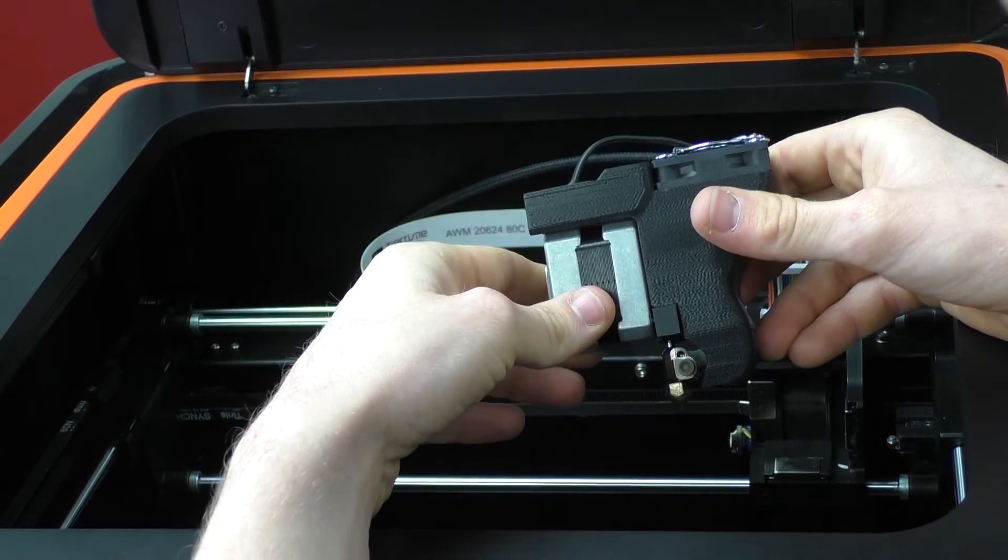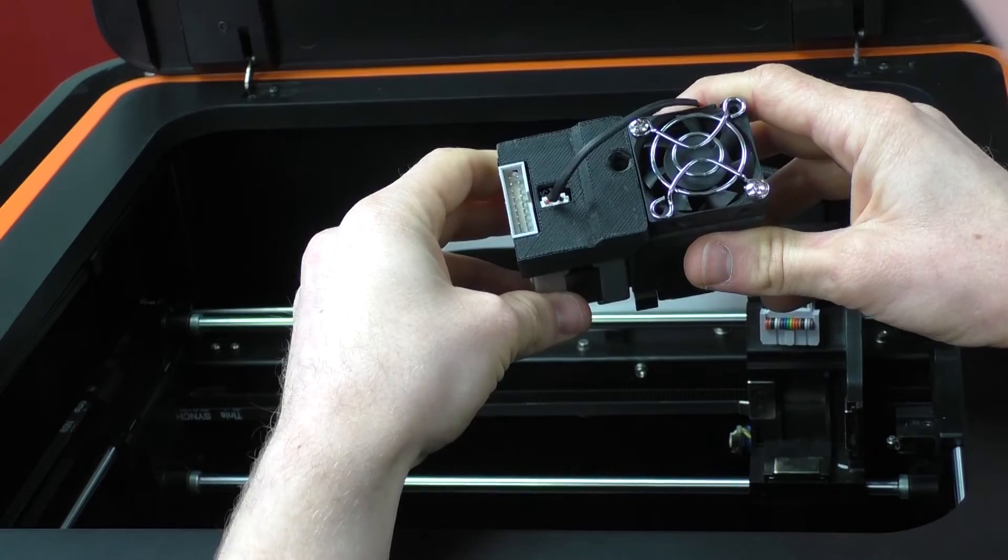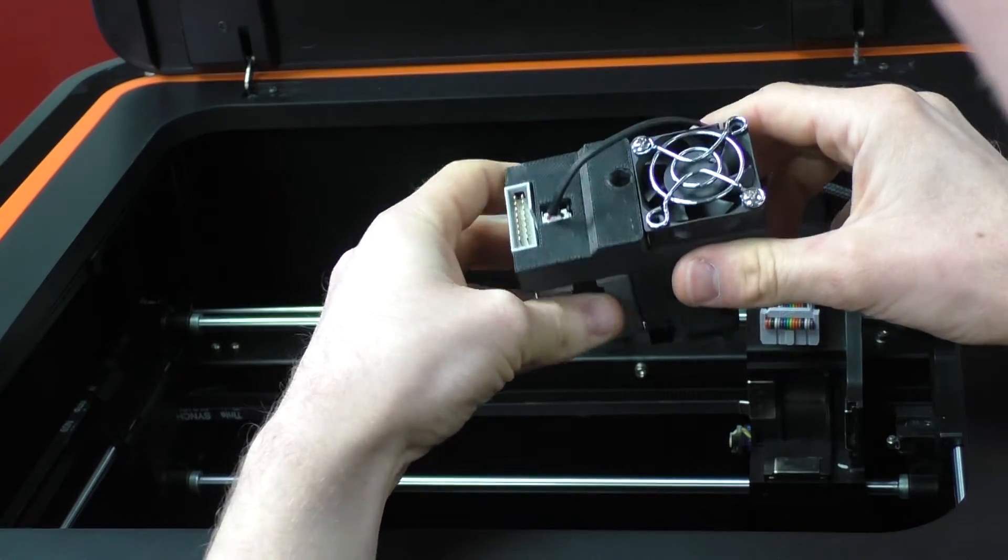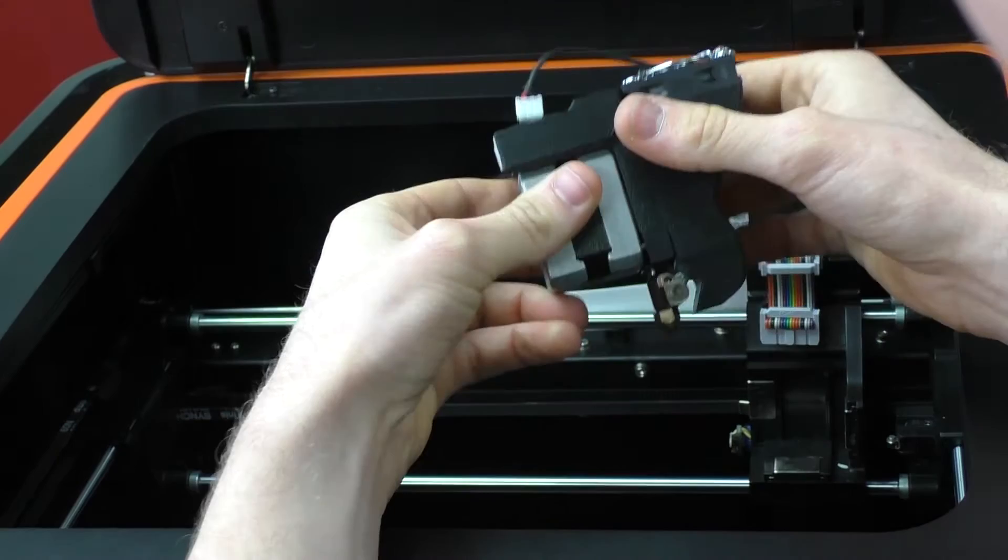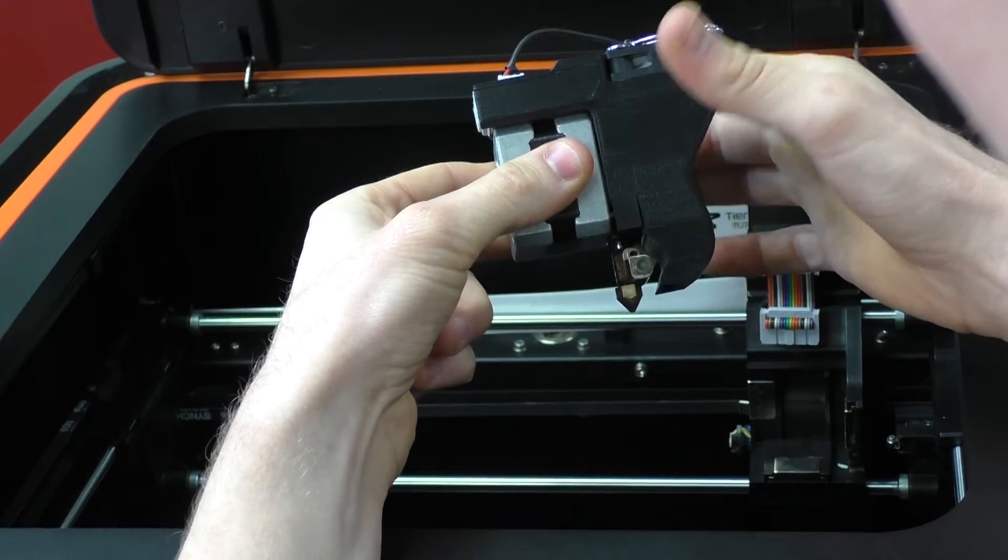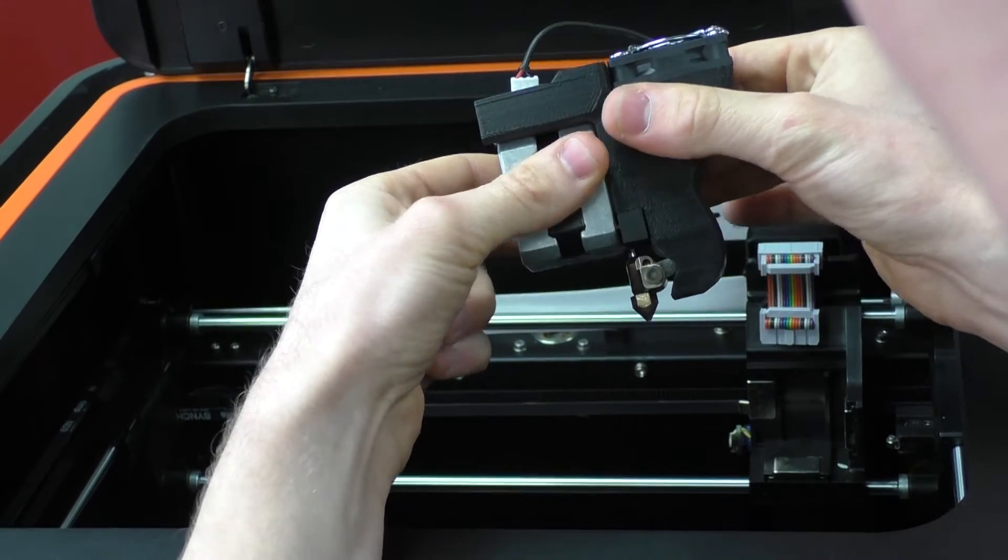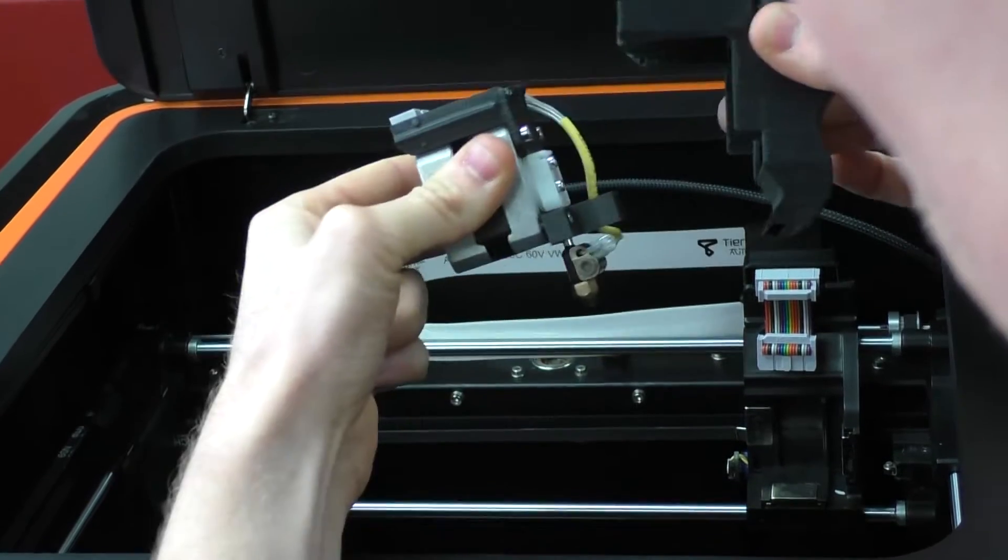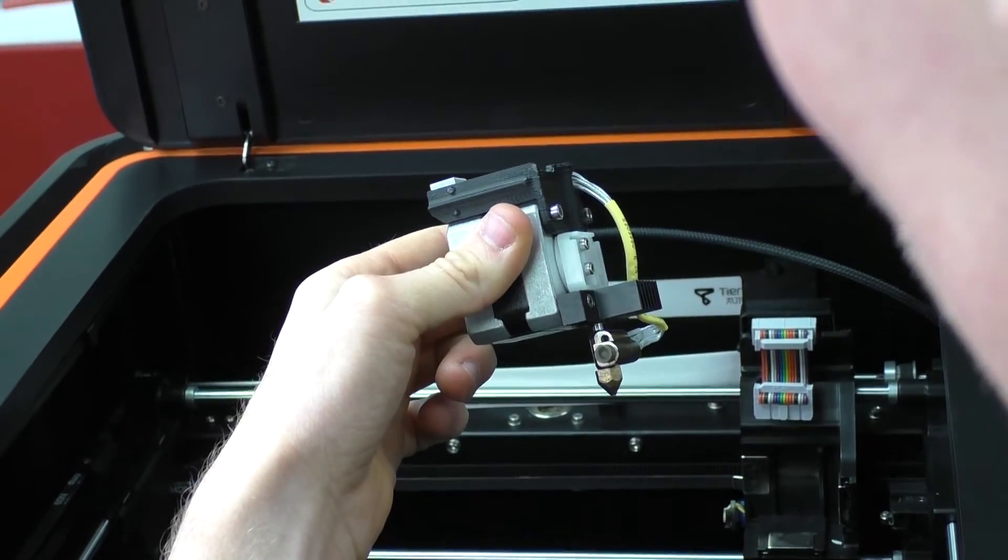Alright, so we've taken our print head out of its mount. Next thing we're going to do is take off the print head cover. Right, now we'll take out the fan from the top of the print head. Hold the motor in your left hand, hold the print head cover at the top in your right hand, slide them apart. Give them a little bit of wiggle if it's tight, and that print head cover will come away.